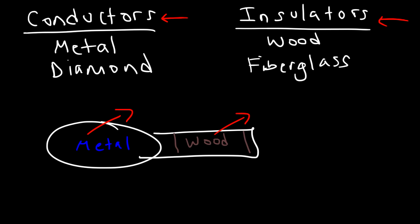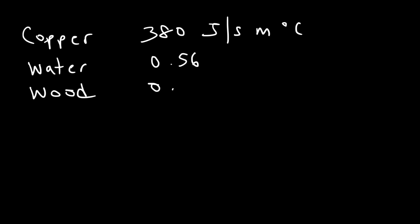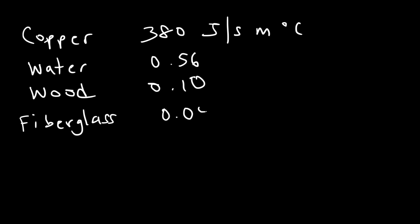There's a term known as thermal conductivity. Metals, being good conductors, have a very high thermal conductivity value. For example, copper has a thermal conductivity of 380 joules per second per meter per Celsius. Water is 0.56 — much less than copper. Wood, a known insulator, is around 0.10. Fiberglass has a thermal conductivity of 0.048, making it a very good insulator.